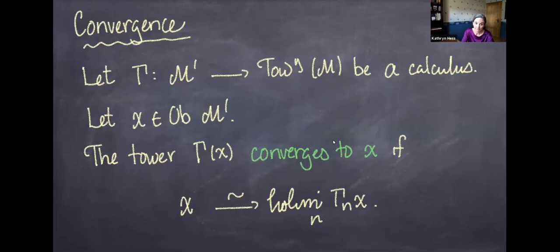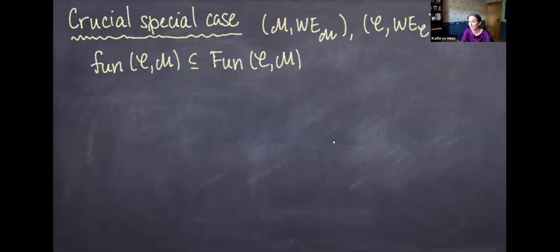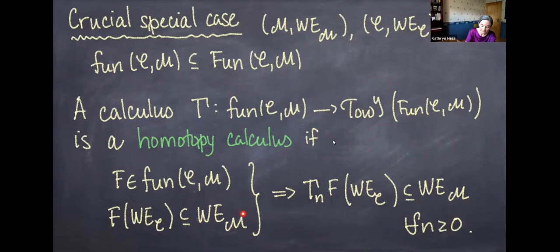When thinking about the original motivations of the Goodwillie homotopy calculus, people are interested in developing calculi on functor categories where M is a category of functors from some category into a model category. In that special case: we have categories M and C both with weak equivalences, focusing on a subcategory of functors from C to M. We'll say a calculus is a homotopy calculus if every functor preserving weak equivalences has its image under each gamma_N also preserving weak equivalences — taking homotopy functors to homotopy functors.